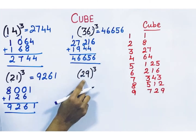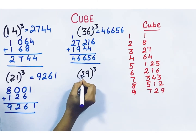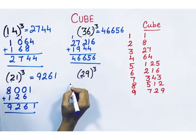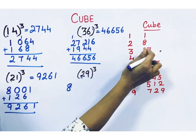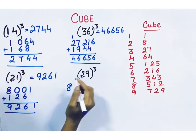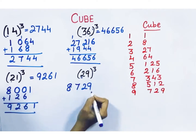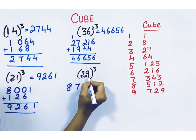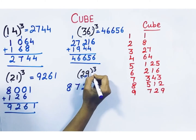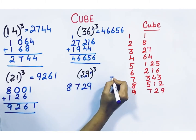Next, cube of 29. First digit is 2 — 2 cube is 8. Then 9 — 9 cube is 729. Next step: 2 into 9 is 18, then 18 into 3 is 54.